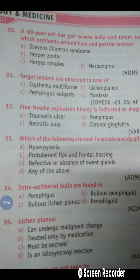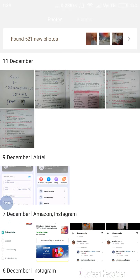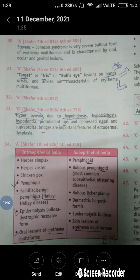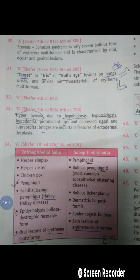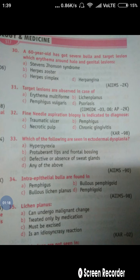Question number 31: Target lesions are observed in the case of which condition? Target lesions are also called iris lesions or bullseye lesions, and these are the characteristic features of Erythema Multiforme. That's why option A is correct. The target or iris or bullseye lesions are found on the hand, wrist, and ankles and are characteristic features of Erythema Multiforme. You should learn that target lesions and bullseye lesions are seen in Erythema Multiforme.